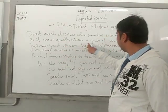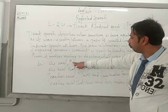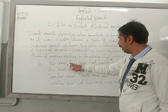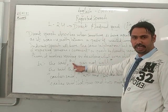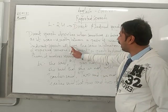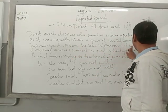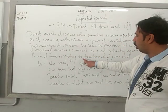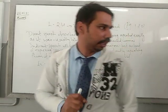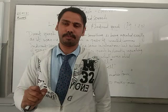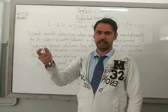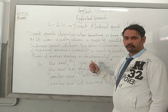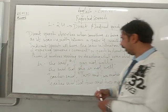That is direct speech — something being repeated exactly as it was said, and it is placed between a pair of inverted commas. So the statement of the speaker will be within the inverted commas. Indirect speech shares the same information but instead of quoting it, it involves reporting it — meaning when the statement of the speaker is reported to a third person.